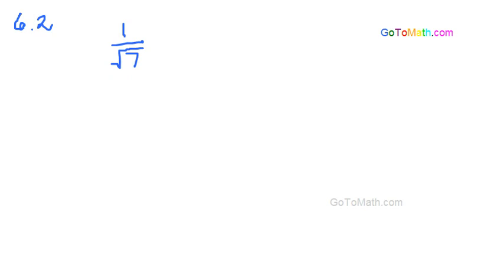And we're going to do that by multiplying the denominator by the square root of 7 and then the numerator by the square root of 7.